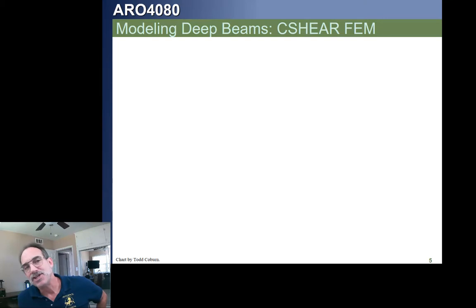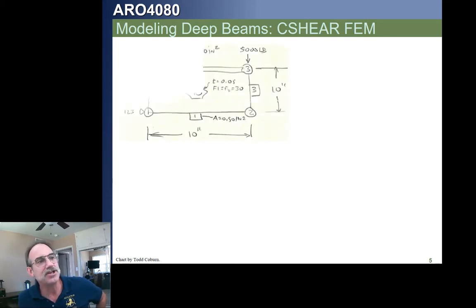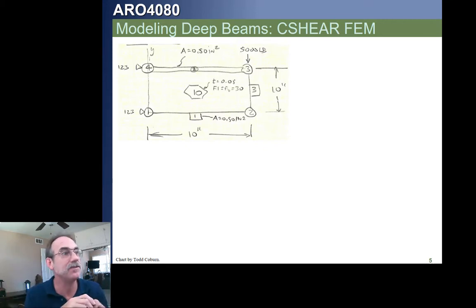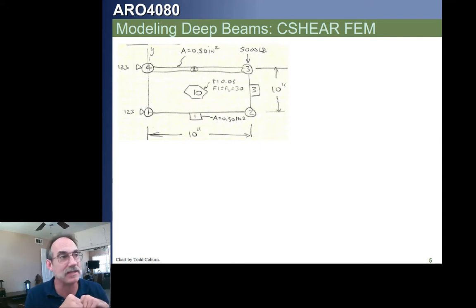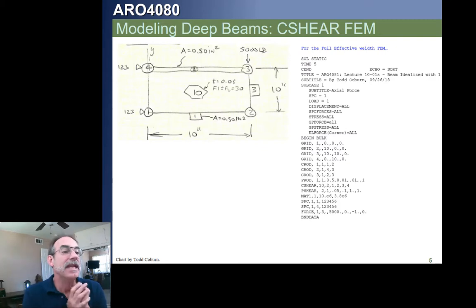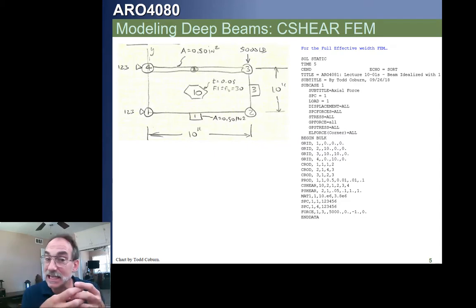Now let's look at the next element: the C-shear element. If we use a C-shear element for the deep beam, we would typically use rods on either side — using bars but just carrying axial load, like our typical lumped area assumption. So the rods carry all normal stresses and the panel carries just shear stresses. With a C-shear element, we have three bars and a single shear panel. Our model might look like this. We're going to look at two different ways of modeling this with shear panels.